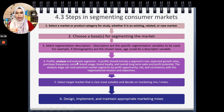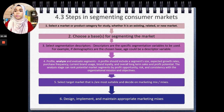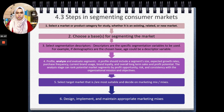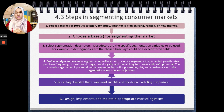Step four: profile, analyze, and evaluate the segments. Profiling should include segment size, expected growth rates, purchase frequency, current brand usage, brand loyalty, and overall long-term sales and profit potential. When analyzing, rank potential market segments by profit opportunity, risk, and consistency with the organization's mission and objectives.